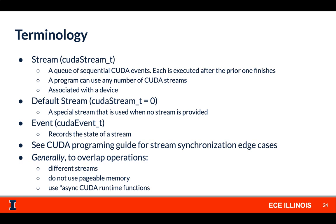Generally, to overlap operations, you want to use different streams for those operations. You also want to avoid using pageable memory, so you want to use pinned memory on the host, and you want to use the async CUDA runtime functions.